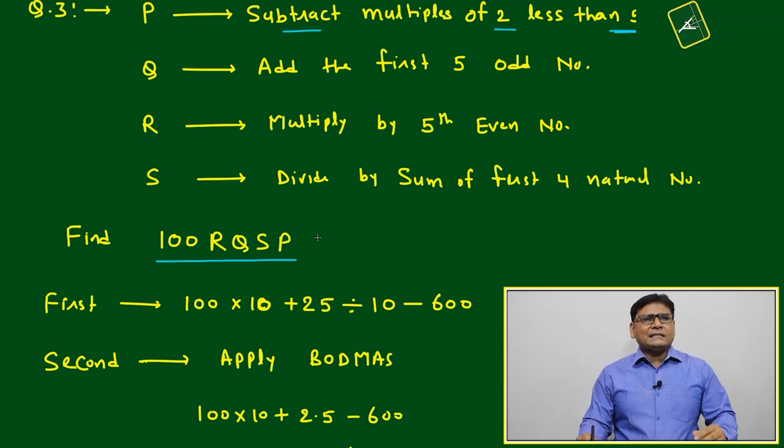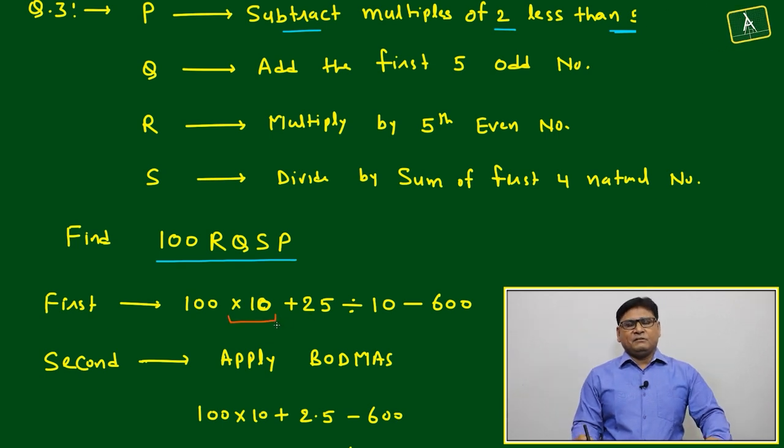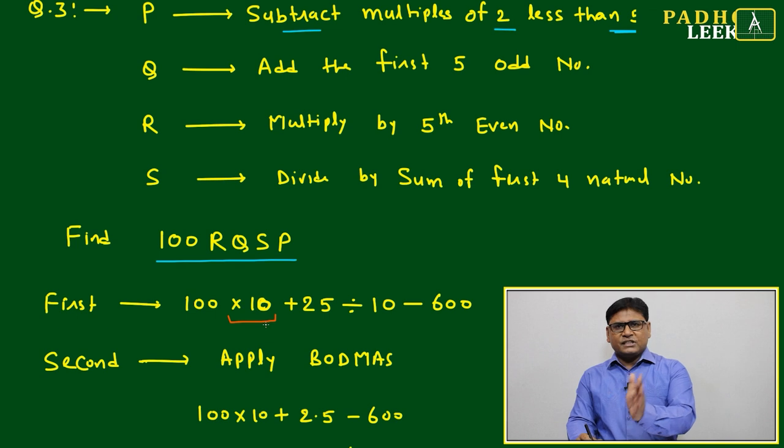Whatever given for R, R is given multiply by fifth even number. What is fifth even number? It is 10. Even numbers will start with 2, 4, 6, 8, 10.